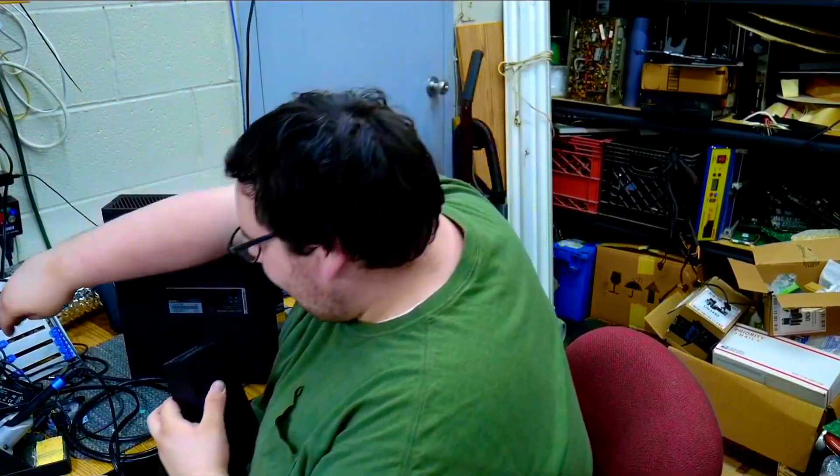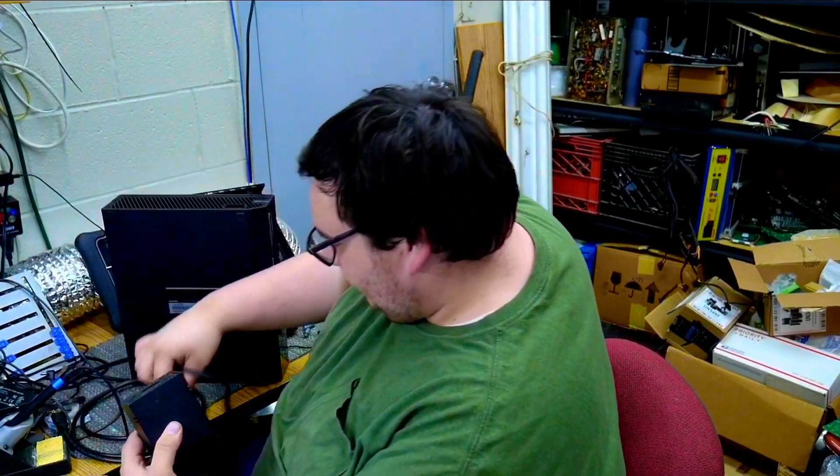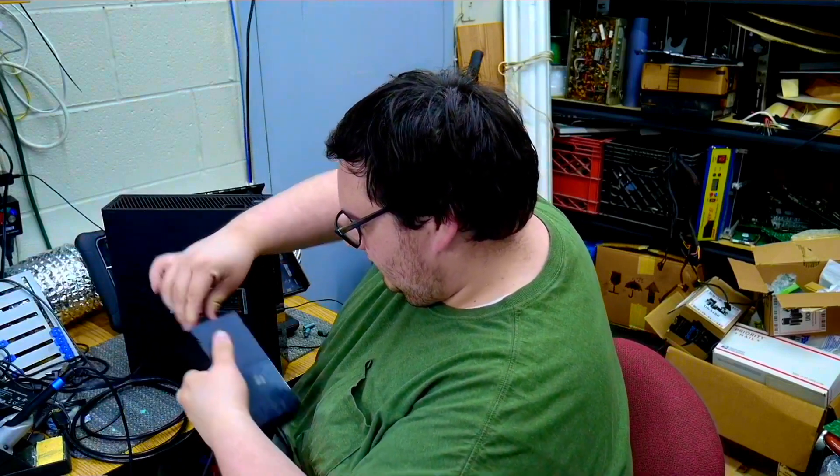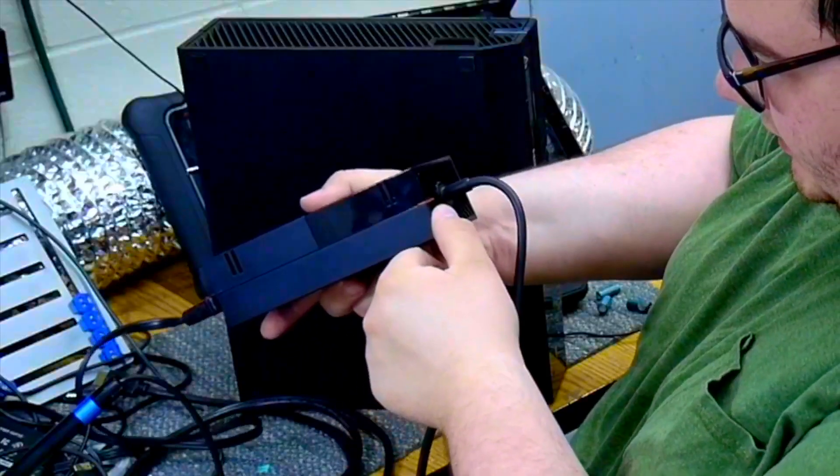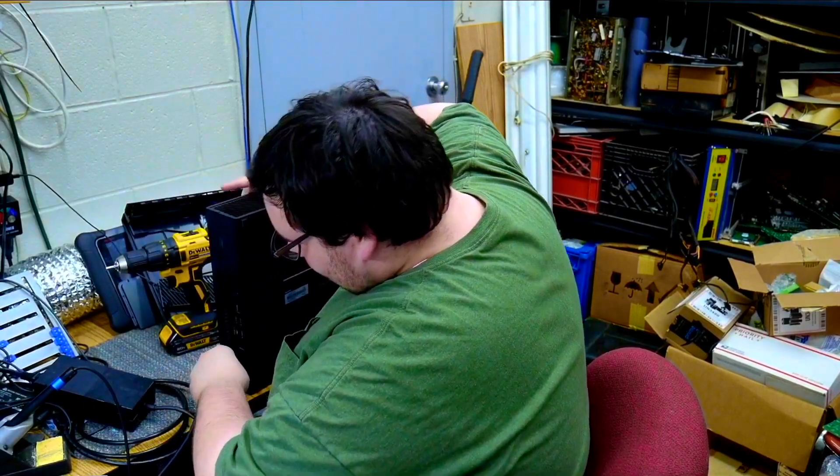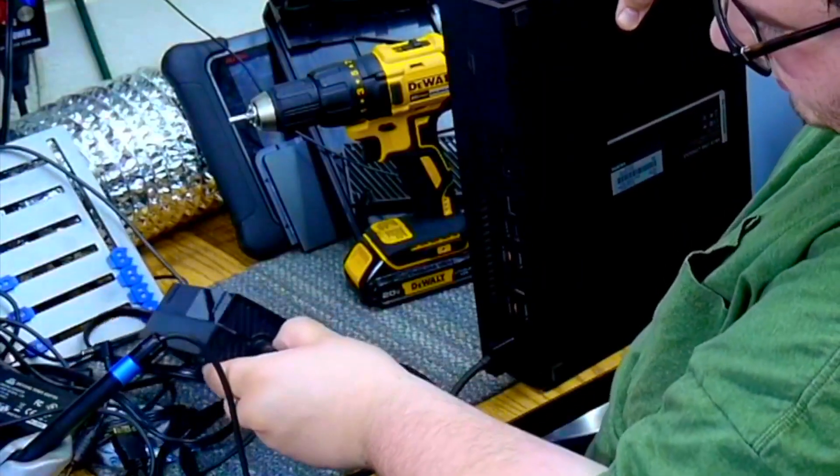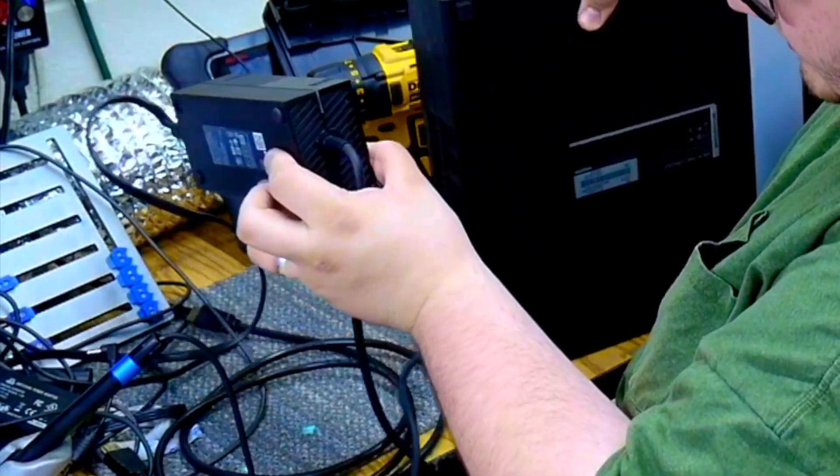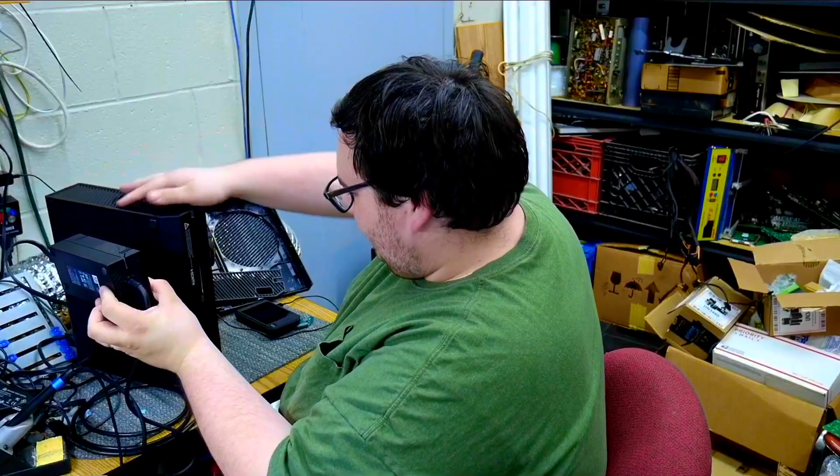So I have an Xbox One here and I got the power supply. Let's go ahead and plug it in. We're looking for an orange light, and there is an orange light, which is great. Then we go and plug this in. We should see this go to white, which it's a very dim white, but it is there. And that is great.